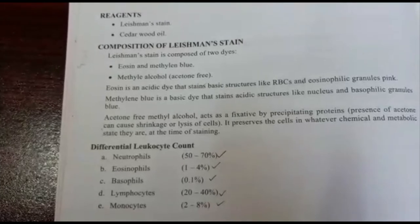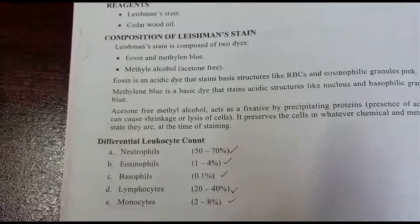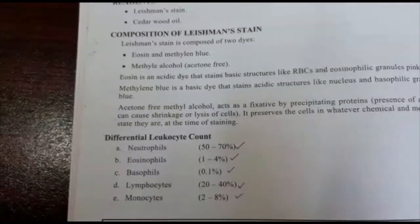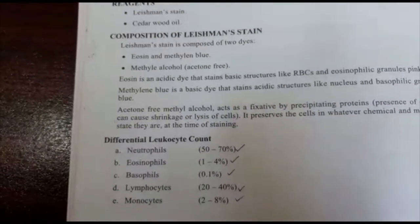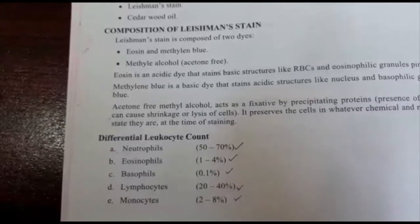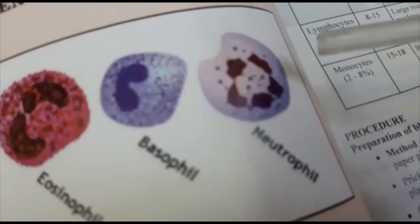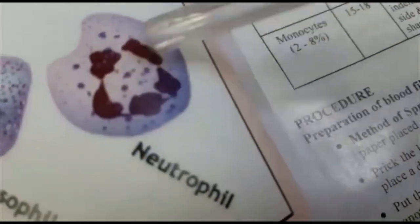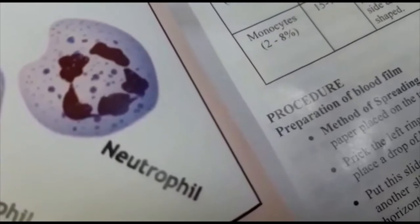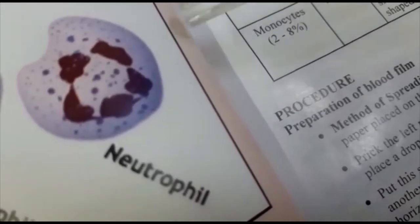Differential leucocyte count includes neutrophils, eosinophils, basophils, lymphocytes, and monocytes. Neutrophils are normally 50–70% with 2–5 lobes; you can see 5 lobes here. The granules are fine pink or purple in color — you can see the purple color in the cytoplasm due to fine granules.